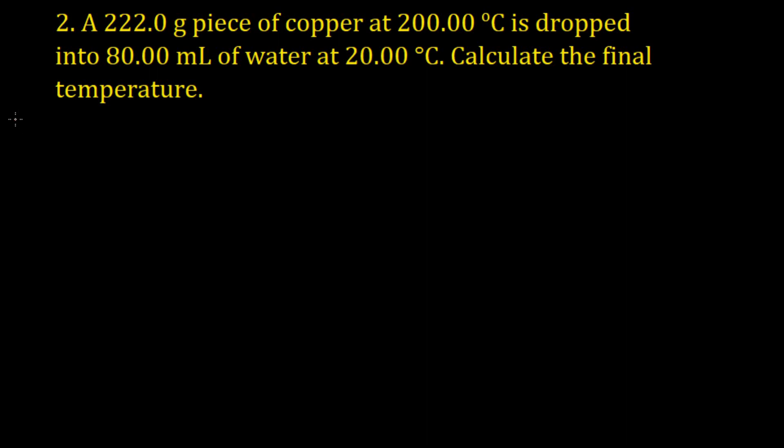A 222.0 grams piece of copper at 200.00 degrees Celsius is dropped into 80.00 milliliters of water at 20.00 degrees Celsius. Calculate the final temperature. Now this one will be different from the last one because we'll be calculating the final temperature rather than the initial temperature.